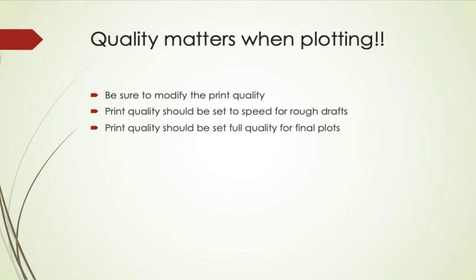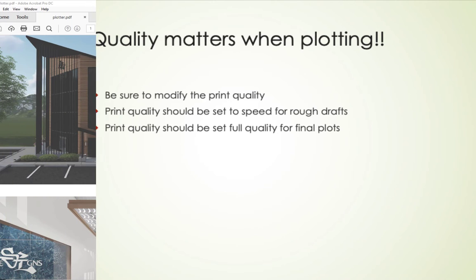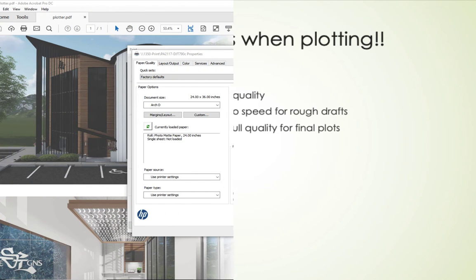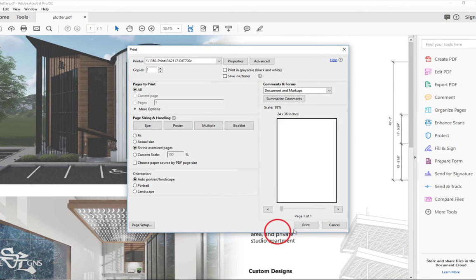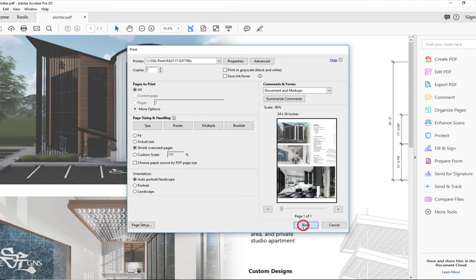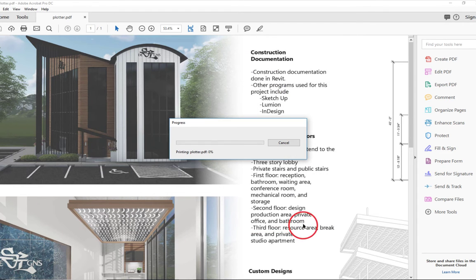Quality matters when plotting. Please be sure to modify the print quality. Print quality should be set to speed for rough drafts, and set to full quality for final plots. In the print property box, there is the print quality also. Slide it to the right in order to set it to quality. Hit OK, then hit the print button, and your plot will print.